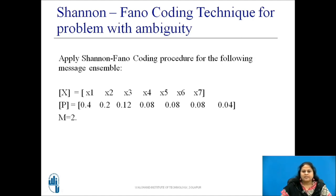Consider this example. Apply Shannon-Fano coding procedure for the following message ensemble. Given is a set of messages consisting of messages from x1 to x7 with the probabilities as shown, and m is equal to 2.